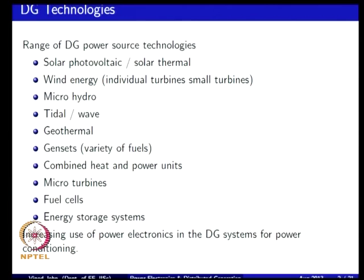The most common form of distributed generation is actually generator sets — commonly diesel generator sets. These generators need not just be fueled with diesel; there can be a variety of fuels, which makes them especially attractive. Generator sets can also be modified to provide combined heat and power units, where you co-generate electricity and also meet thermal requirements — whether cooling or heating. You also have micro turbines, fuel cells, and a variety of energy storage systems such as batteries, ultra capacitors, and flywheels. There is increasing use of power electronics in DG systems, especially for the power conditioning aspect.